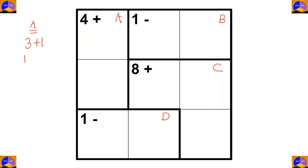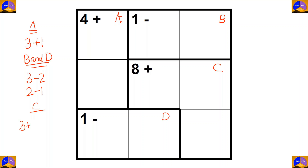For cage A there is only one option: three plus one. As cage B and D are the same, I'm going to write their options together. For cage B and D there are two options: three minus two and two minus one. For cage C there is only one option: three plus three plus two.